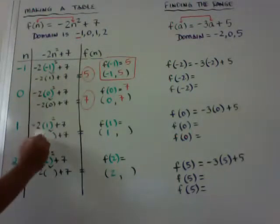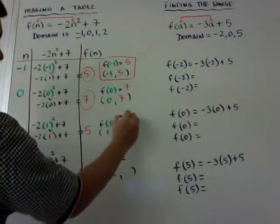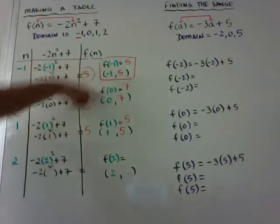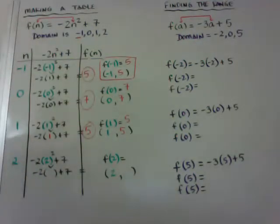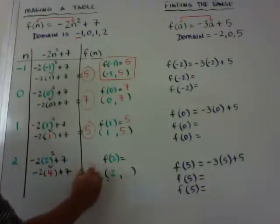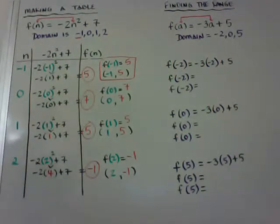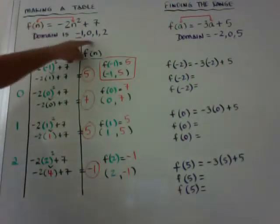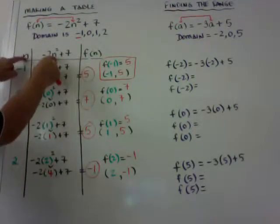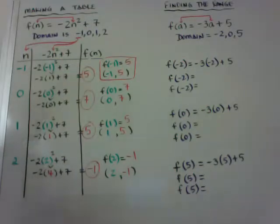For n = 2: 2² = 4, so -2(4) = -8, plus 7 gives -1. So f(2) = -1. That's how you make a table — substituting each domain value in for both instances of n in the function.